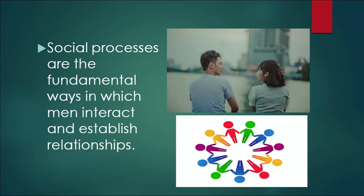Social processes are the fundamental ways in which people interact and establish relationships. You can see a picture where both male and female are talking to each other — they are talking in a sense of establishing a relationship. So we can say that a social process between two actors is not a one-way process and cannot involve one actor only.